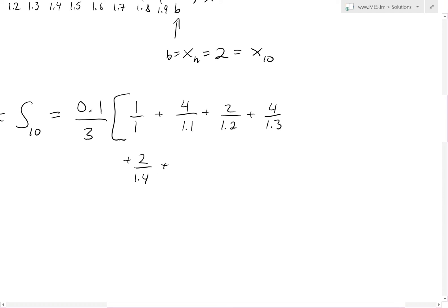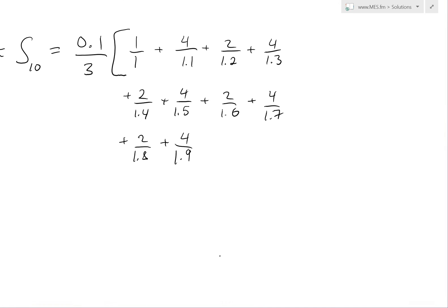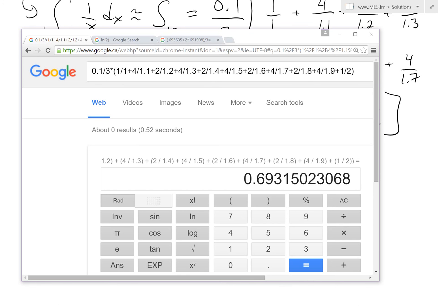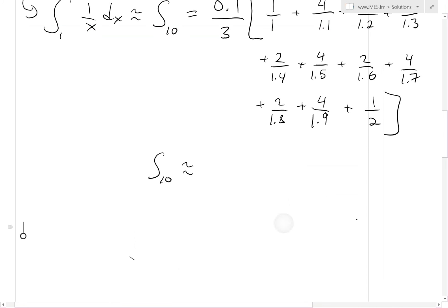Plus 2 over 1.4, plus 4 over 1.5, plus 2 again, 1.6, plus 4 over 1.7, plus 2 over 1.8, plus 4 over 1.9. The last one is, the second last is a 4, then it goes 1 divided by 2. Plug this all into the calculator, we get roughly S_10 is roughly equal to, I've put that into a Google calculator, 0.1 divided by 3, we get 0.693150.